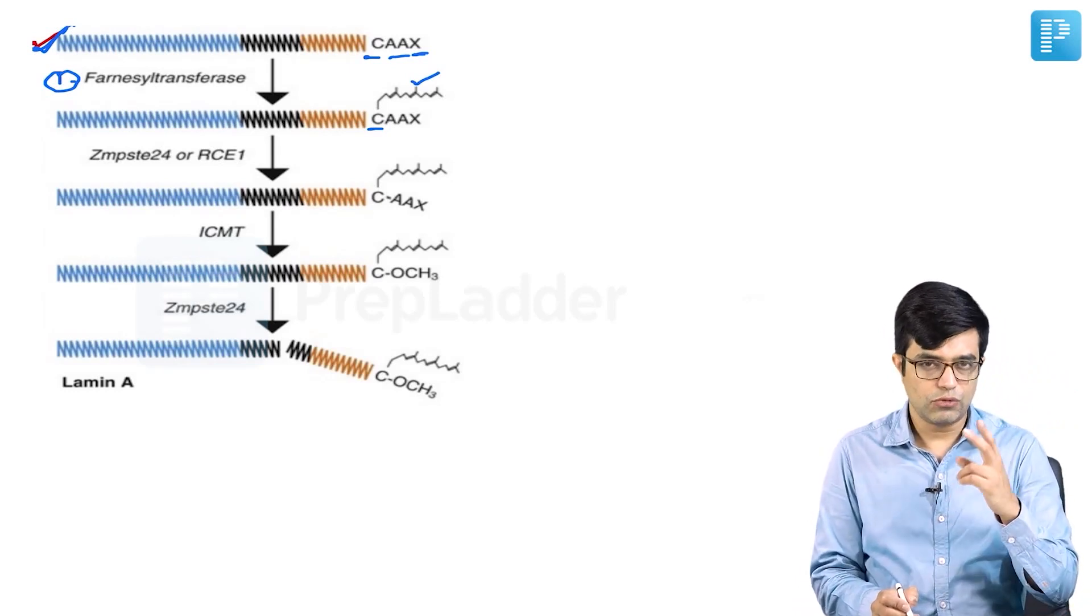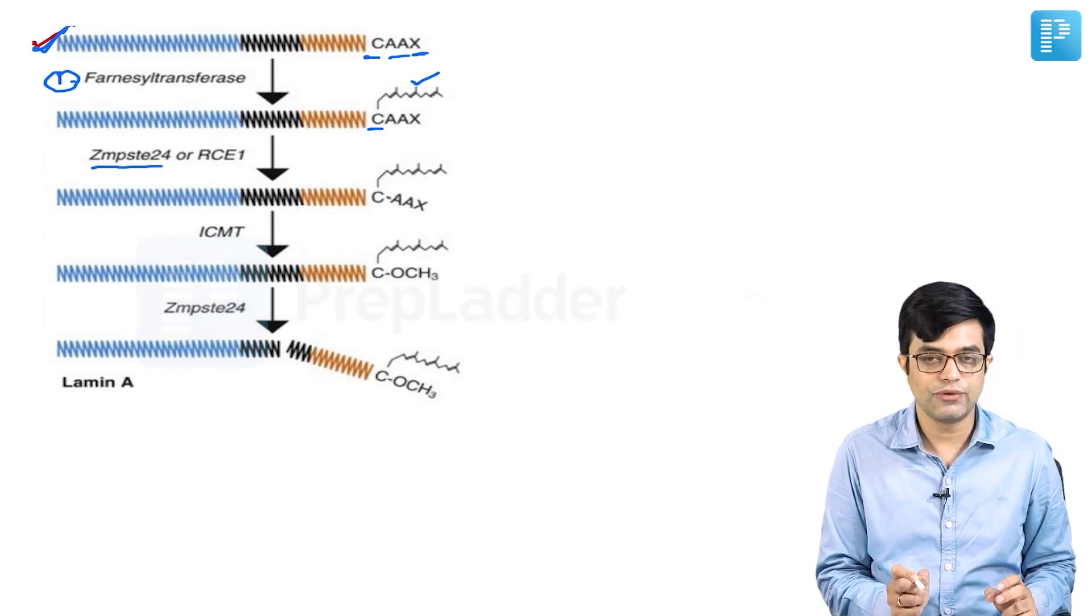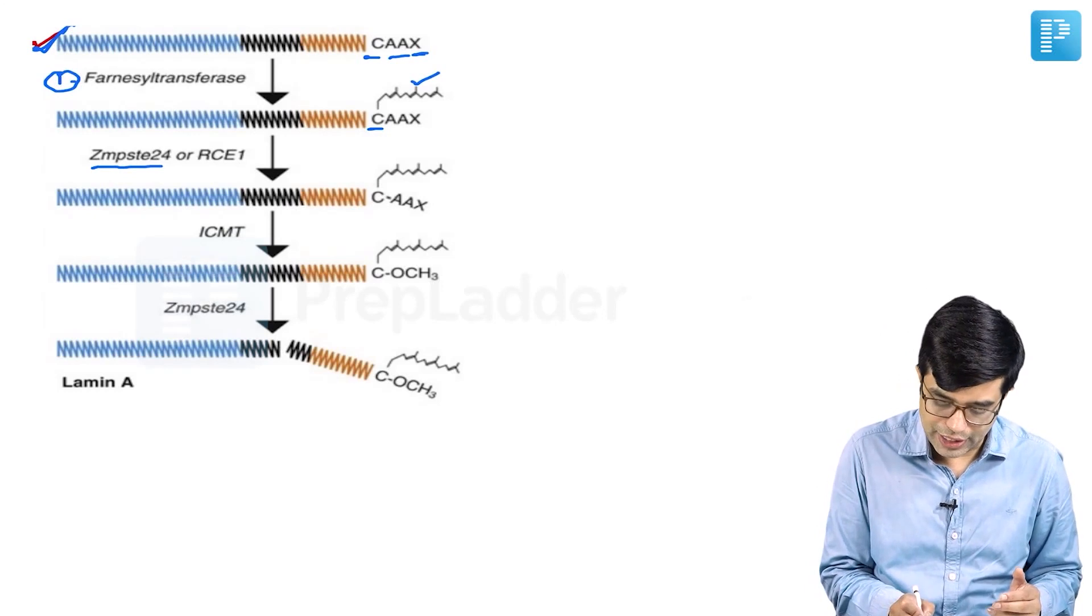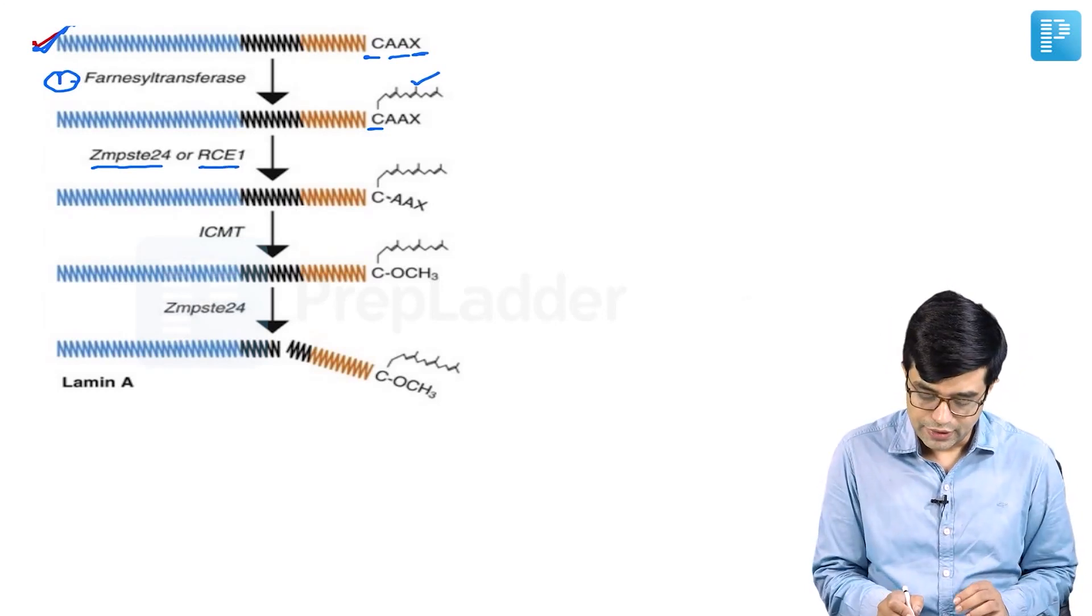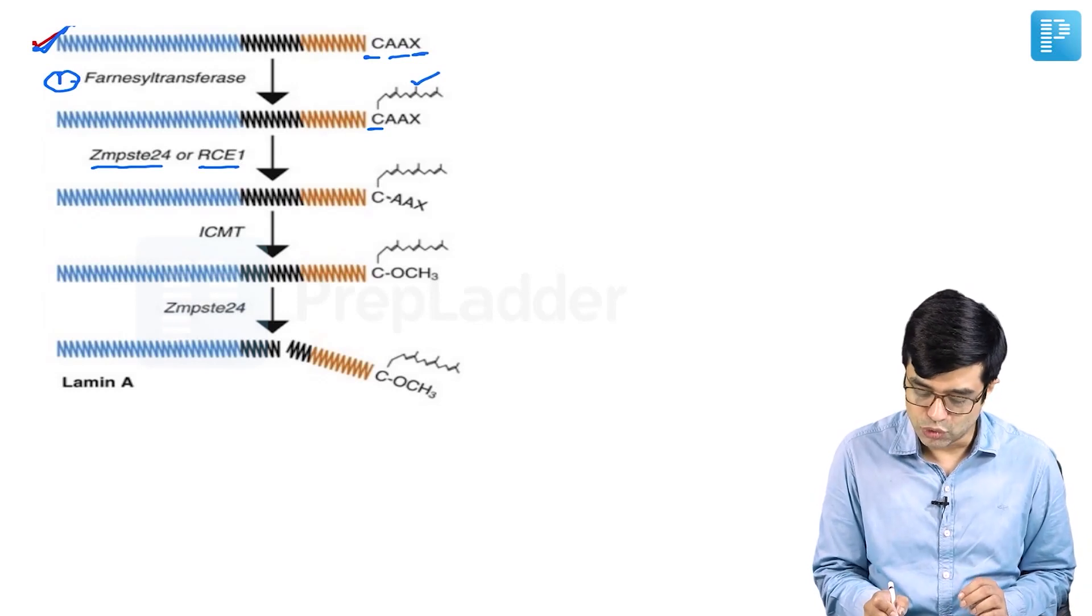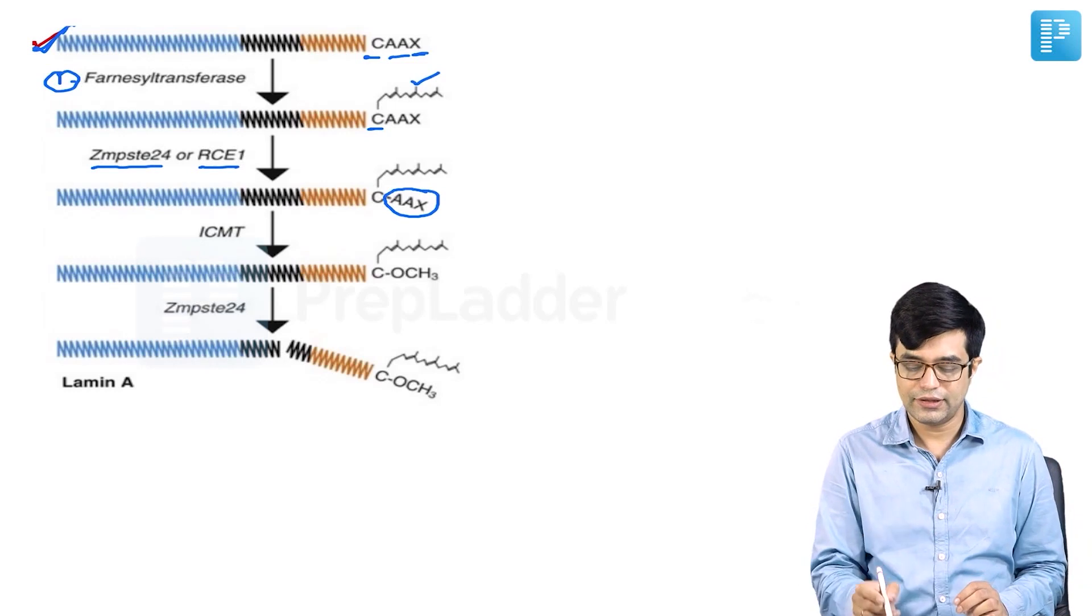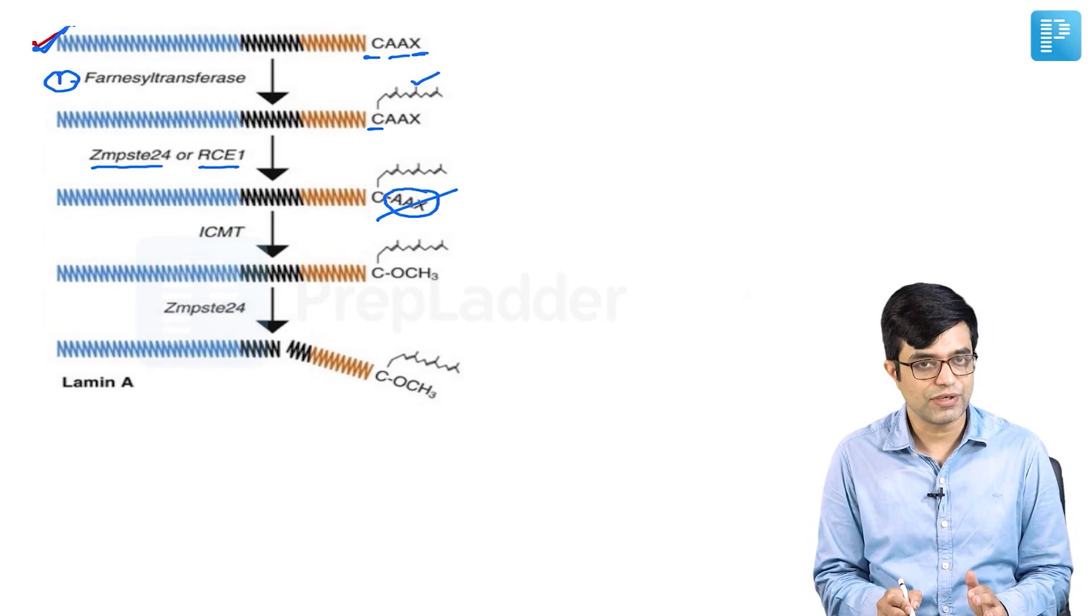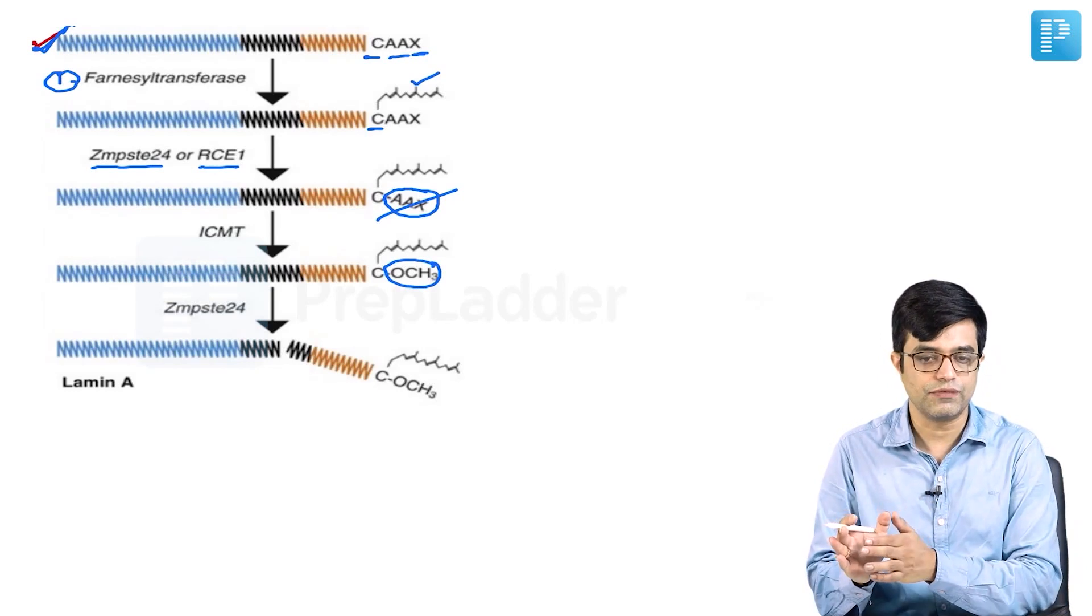Then two enzymes, either ZMPSTE24, which is a zinc-based metalloproteinase, or RCE1, which is a RAS-based protein, act and remove this terminal end. This AAX part is removed. Then ICMT, which is a methyl transferase enzyme, attaches a methyl group in place of this AAX.